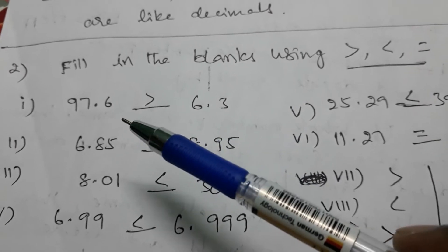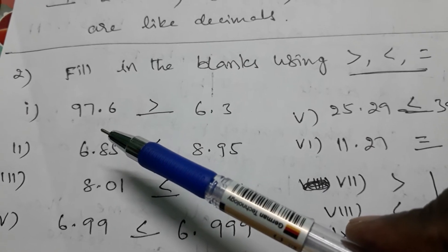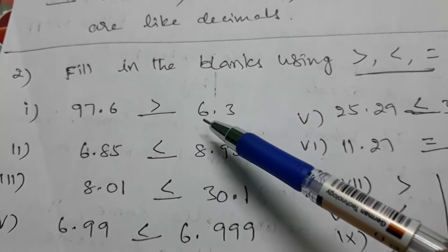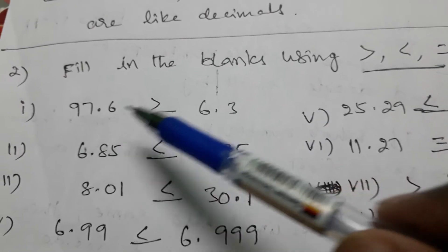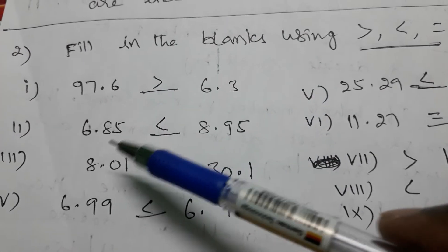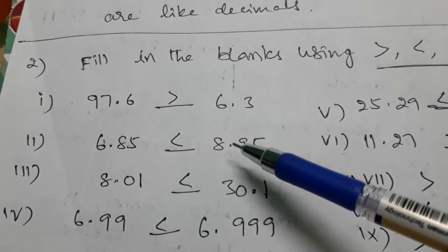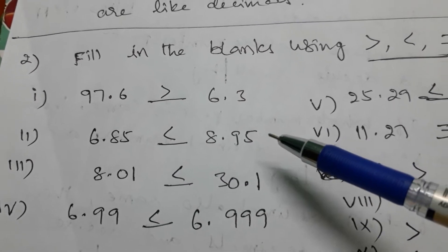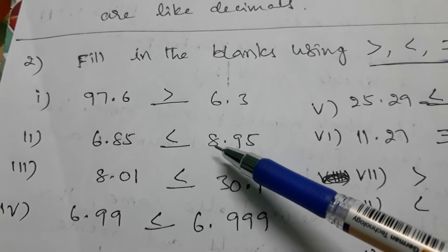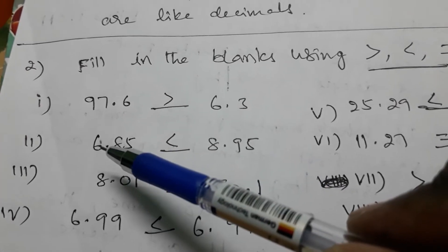To find the greatest, first compare the whole number part — that is the rule. The whole number part here is greater, so the first decimal is greater. For example, 8 and 6: 8 is the whole number part and 8 is greater than 6, so that decimal is greater. You don't need to look at the remaining decimals — just compare the whole number part first.